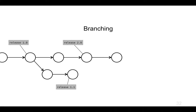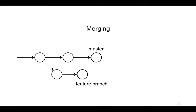Suppose this branching wasn't about release numbers — instead we've got a lot of people working on our codebase. We've got a master branch, and we've also got a team of developers who've created a branch to build a particular feature. The feature code isn't on master yet, but they'd like to share some of those changes back to the master branch so all other developers can see it. In this case, we need to do a merge.